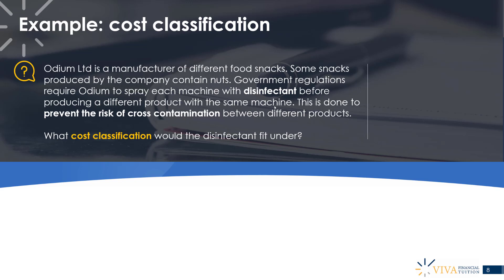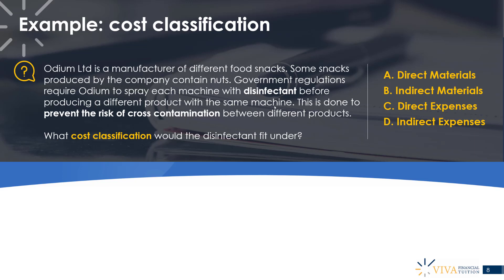The question is: what cost classification would the disinfectant sit under? The four choices are direct materials, indirect materials, direct expenses, or indirect expenses. The best way to approach this is by process of elimination. The disinfectant is used on the production line but is not used in the actual product itself — we wouldn't put disinfectant in a snack bar — but it's used on the machines to prevent cross-contamination as required by government regulations.